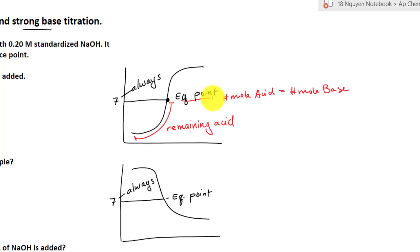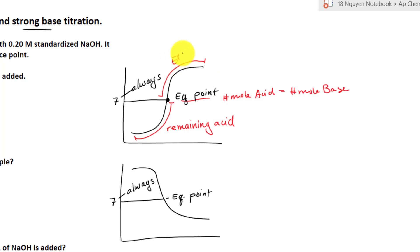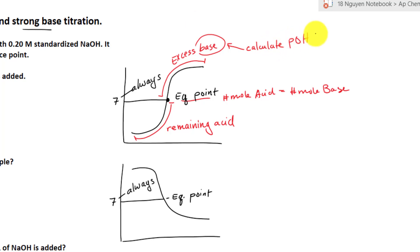But what happens when we pass that point? That means all the acid has been neutralized once you get to the equivalent point. So once you pass the equivalent point, this section right here — this pH will be determined by the excess base. Because it is a base, the only thing you can do is you have to calculate the pOH first before you can solve for pH.